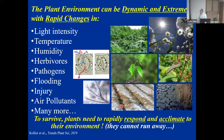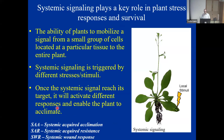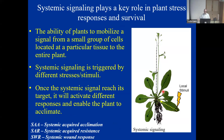As we all know, the plant environment can be really dynamic—there can be extreme changes in different conditions. To survive, plants need to acclimate. One of the things plants do to acclimate is systemic signaling. Systemic signaling is defined as the ability of plants to mobilize a signal from a small group of cells—cells that experience a stress or stimuli—to the rest of the plant. This can be triggered by different stimuli, biotic or abiotic. Once the signal reaches the systemic tissue, it will trigger acclimation.